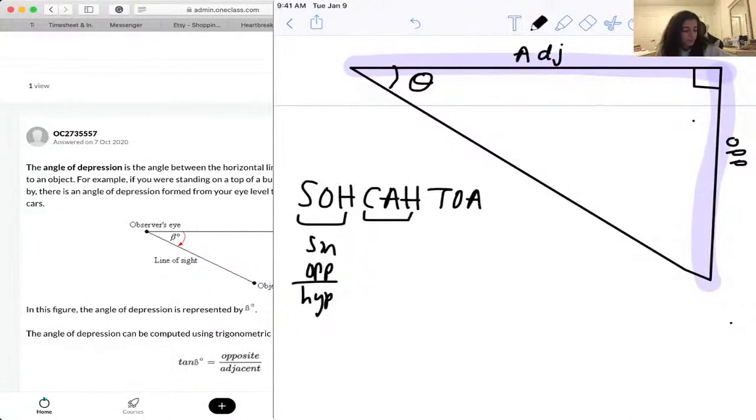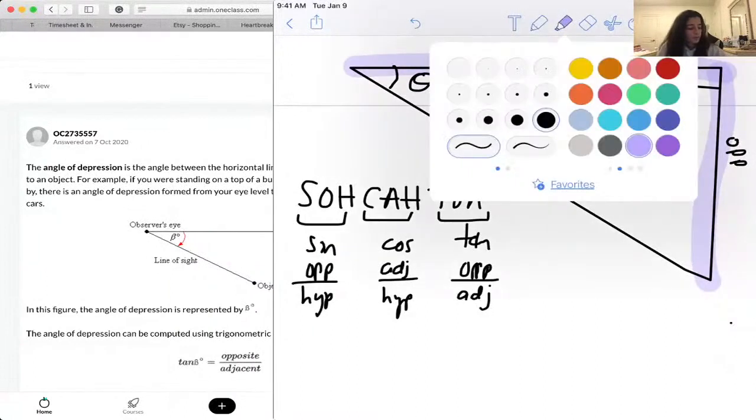This is cosine, which is adjacent over hypotenuse. And this is tan, and this is opposite over adjacent. So that's a really nice way of memorizing this if you ever want to.